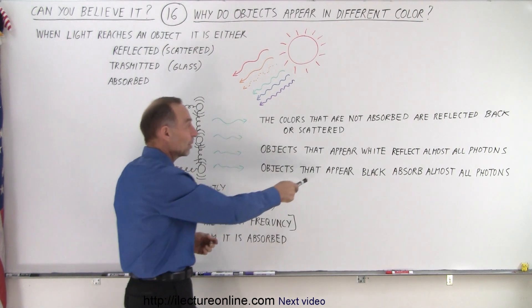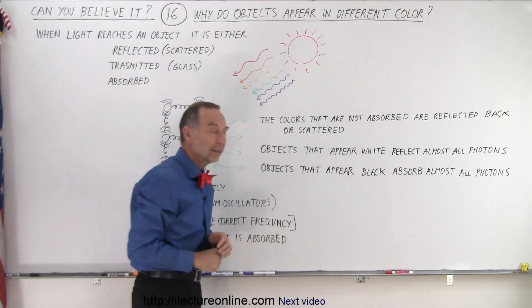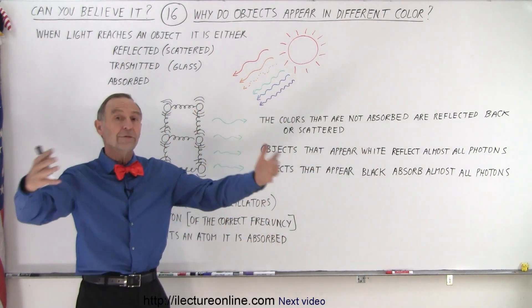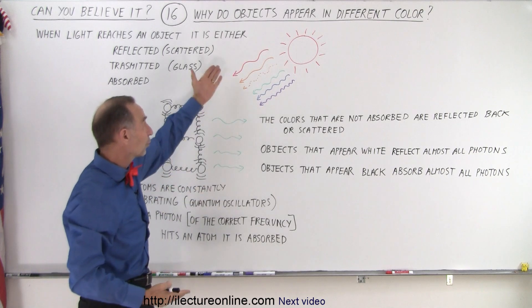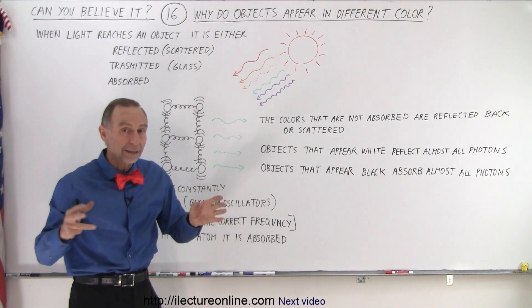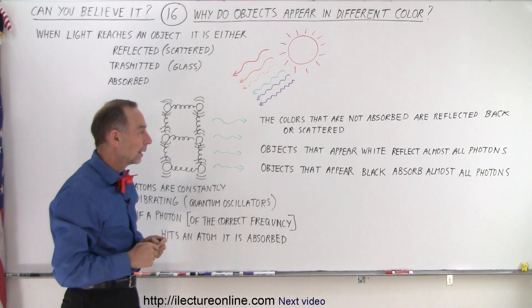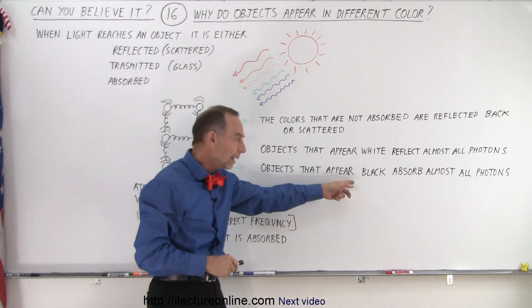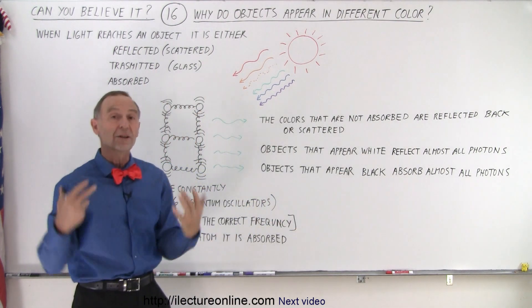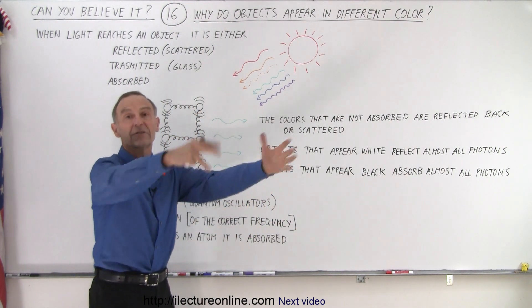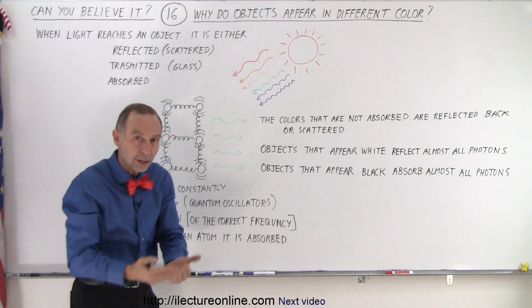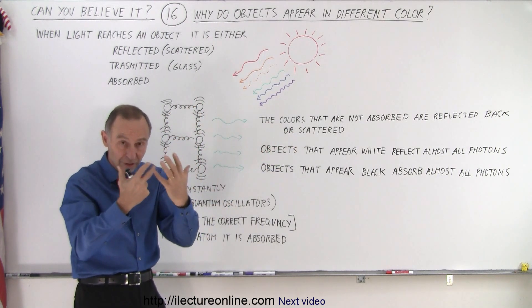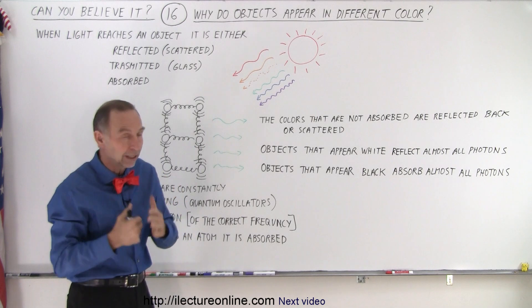Now, when an object appears white, that means that they reflect just about all of the photons or most of the photons, because all the photons combined from sunlight form white light. If an object appears black, well, then almost all the light is absorbed and virtually none of it is reflected back. And that's why an object looks black - because we don't see any light coming from it or very little light coming from it.